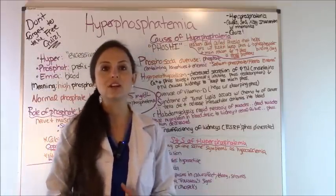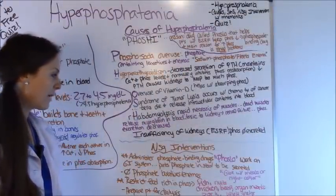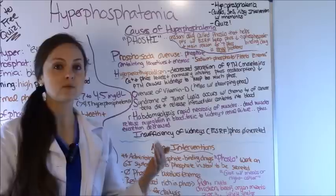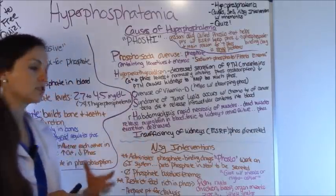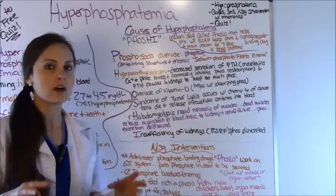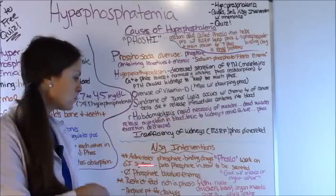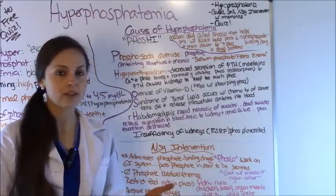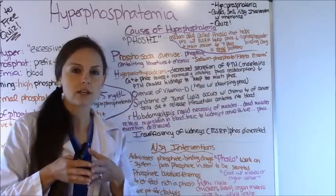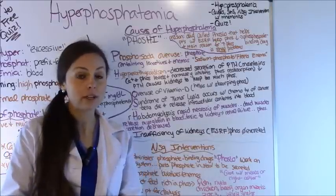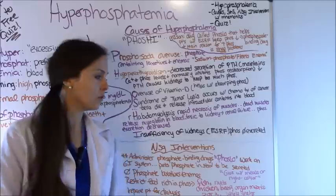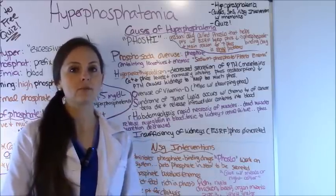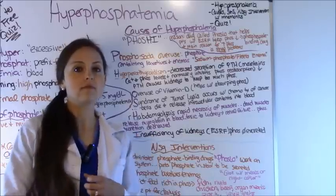Now let's look at the nursing interventions. This first point goes back to our mnemonic — remember Fos-high for the causes? This is where we use Fos-low to help you remember. You're going to be administering those phosphate-binding drugs — Phoslo, generic name calcium acetate — which works on the GI system. The patient eats, you give them Phoslo with or right after the meal, and it helps absorb the phosphorus they don't need because they're in renal failure, excreted into the stool. Giving phosphate-binding medications with food or right after a meal is usually a test question professors love to hit on.